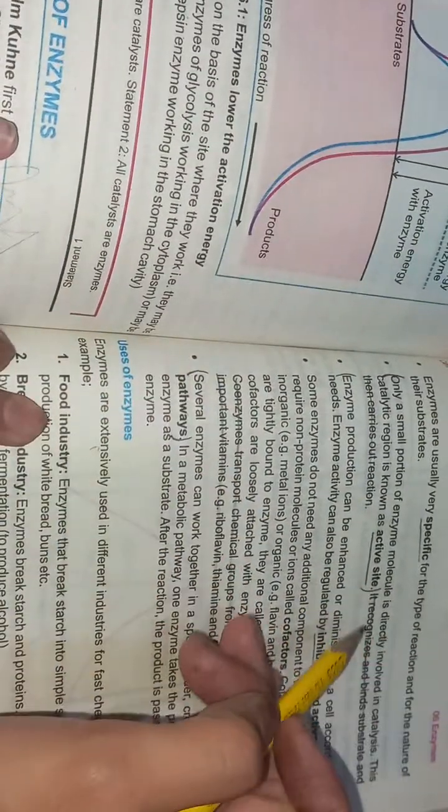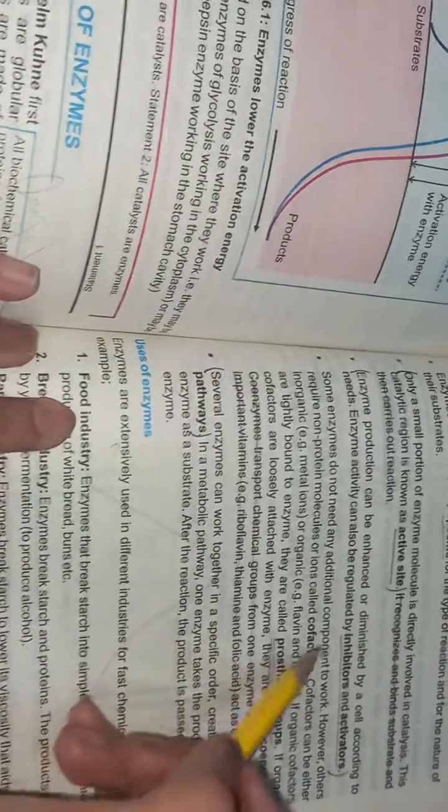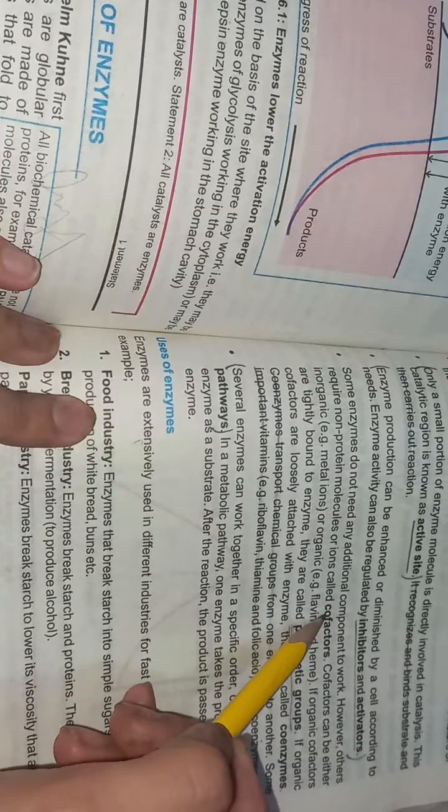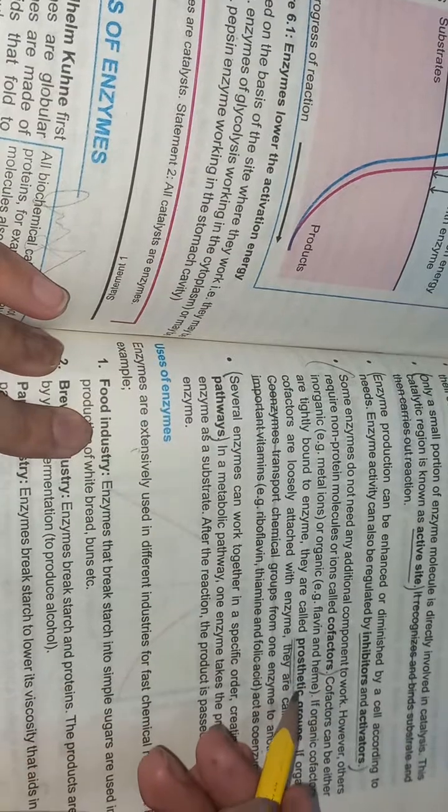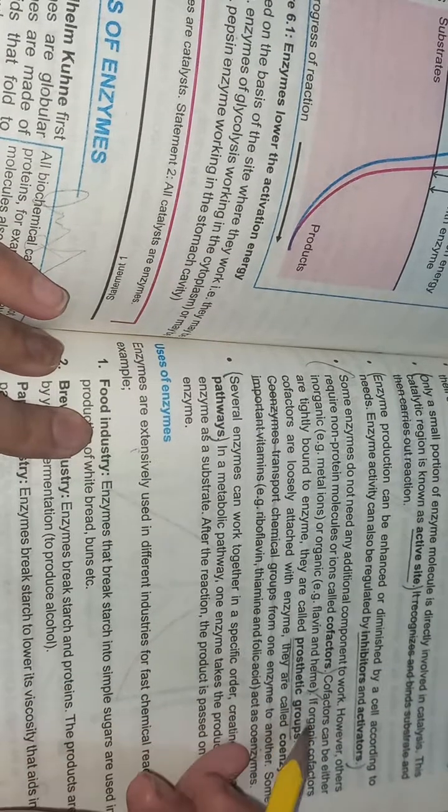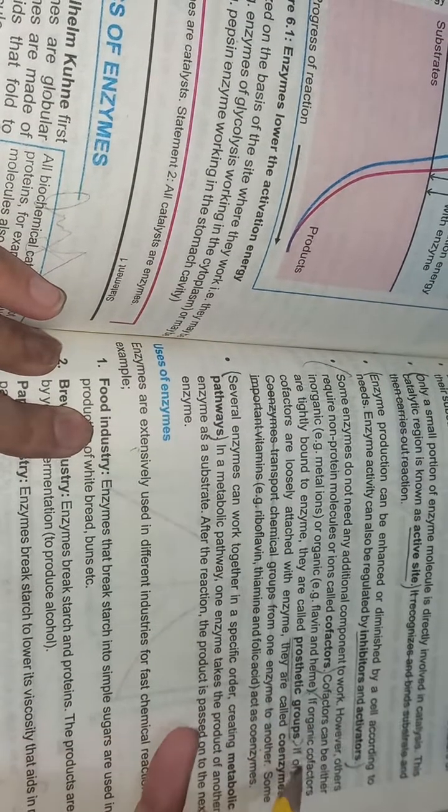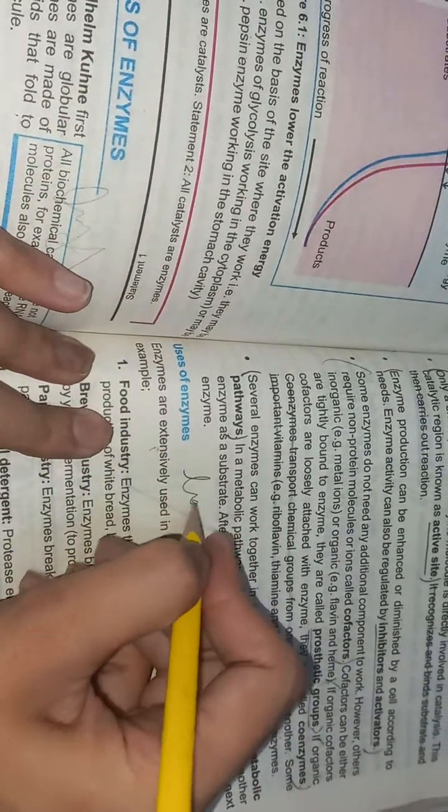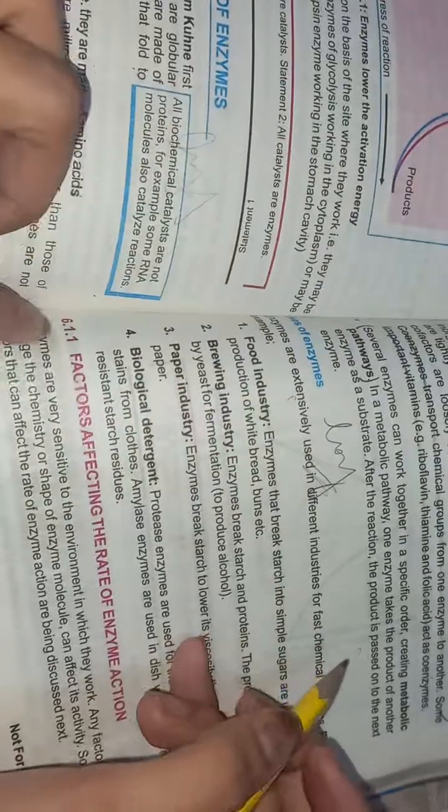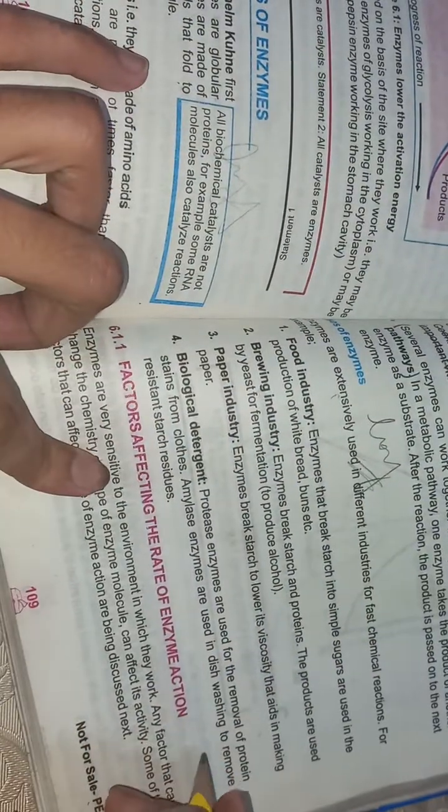What is a short question? Three short questions: co-factor, prosthetic group, and coenzymes. Uses of enzymes, most important long question: factors affecting rate of enzyme.